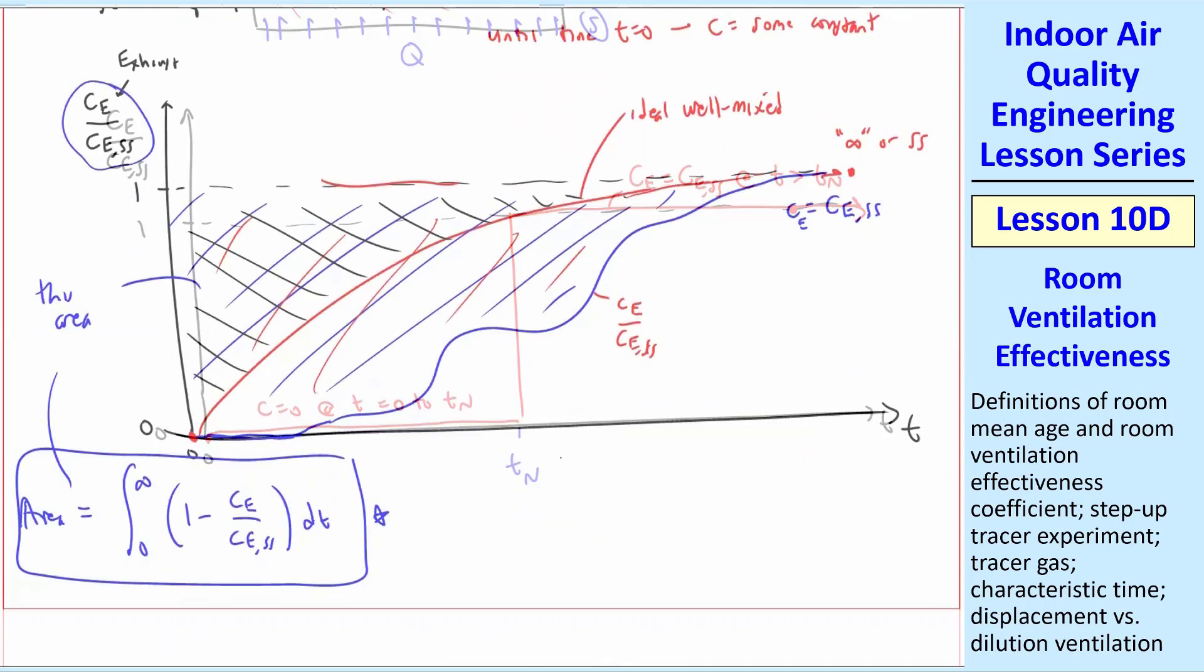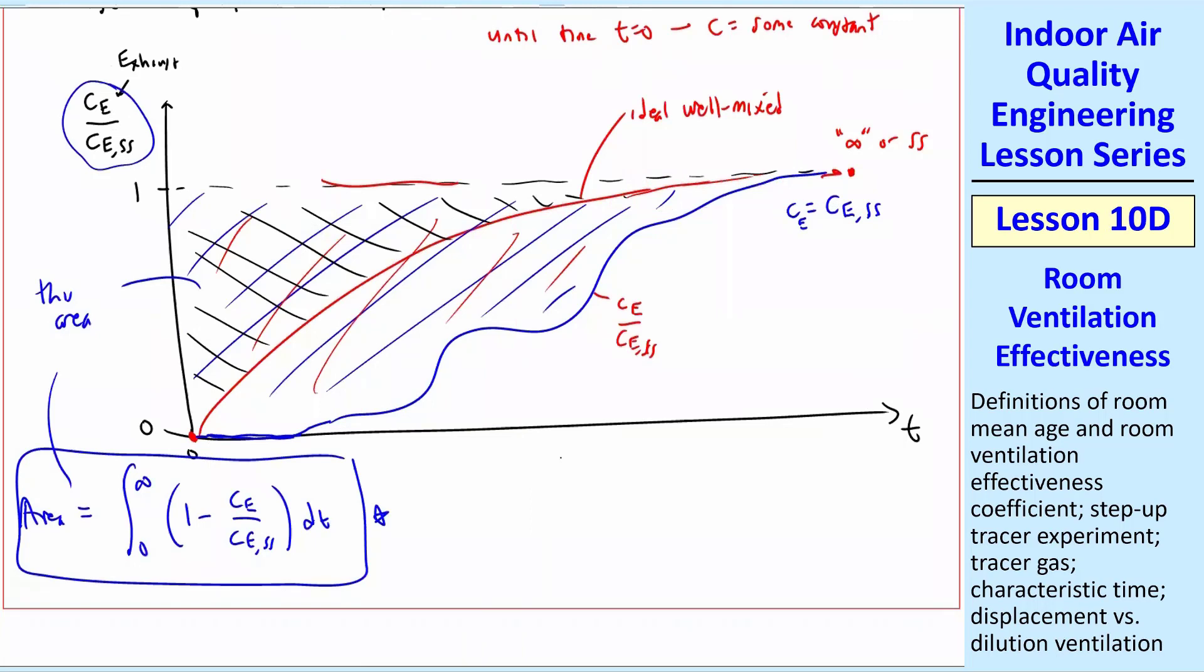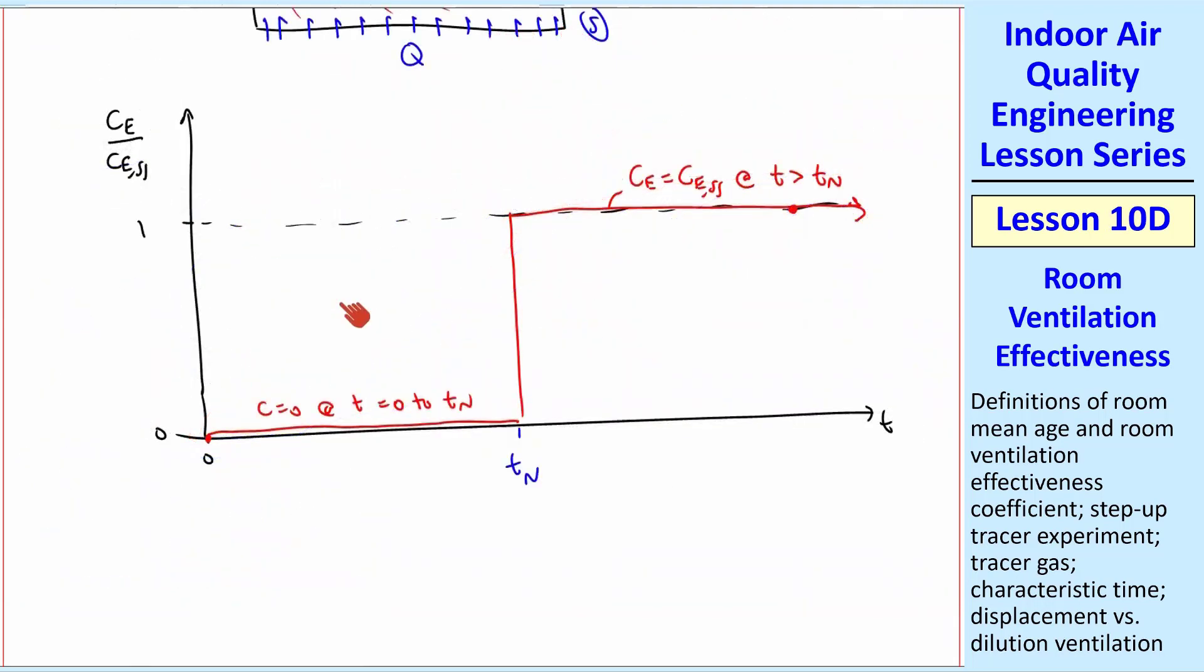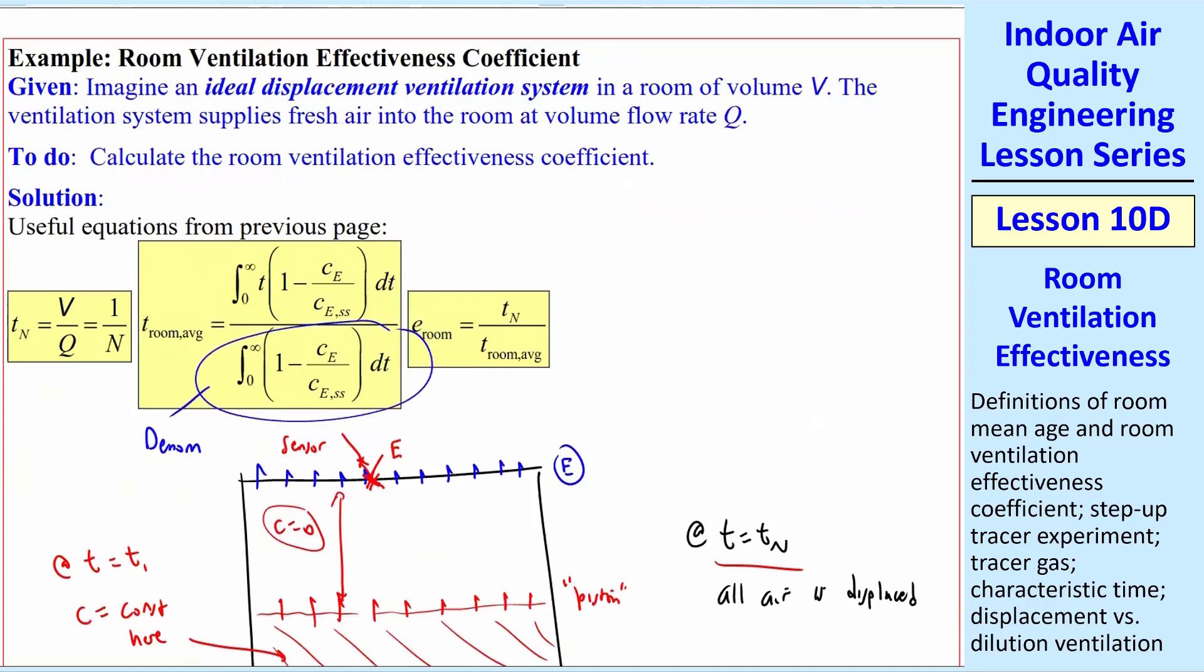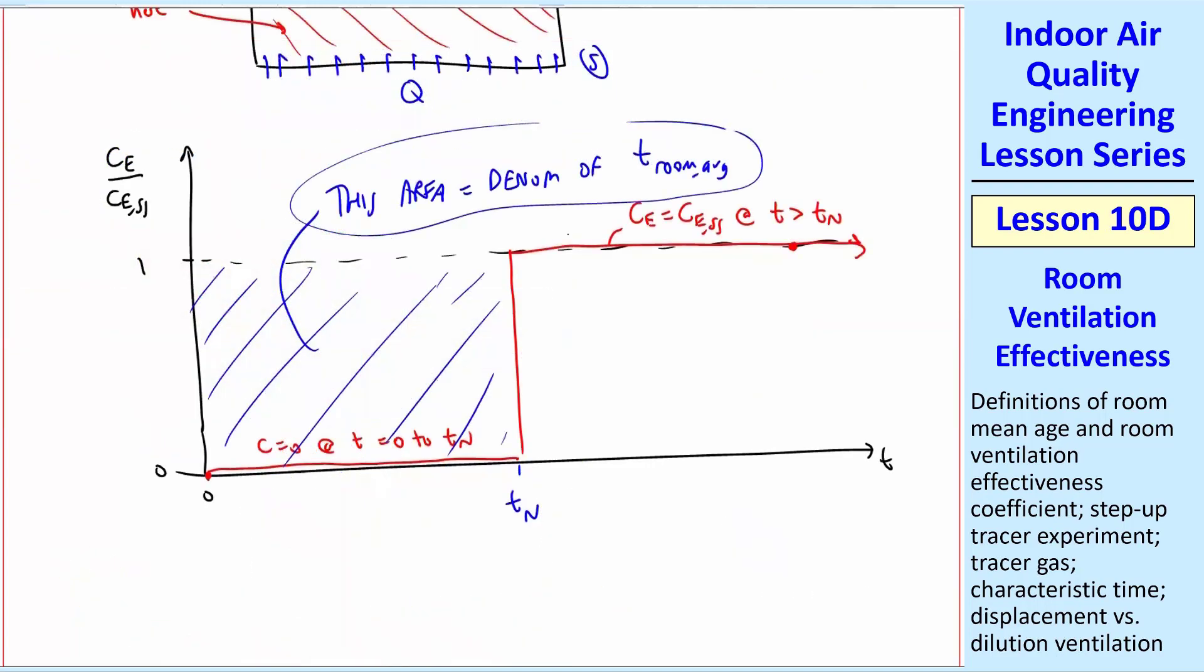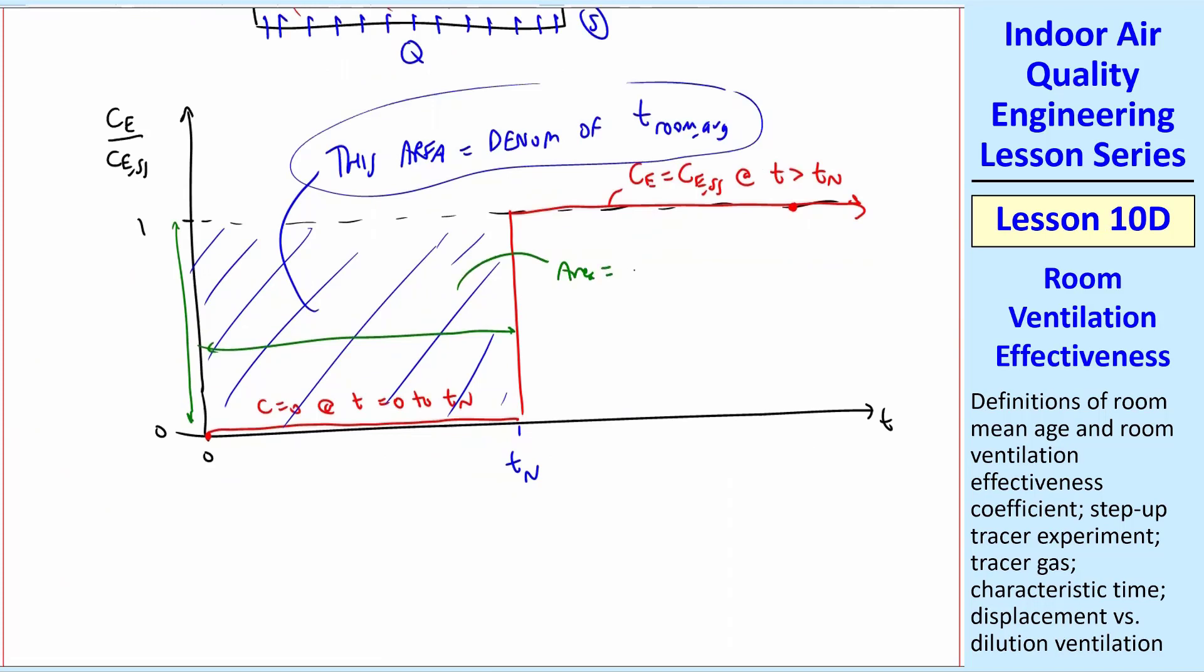So here's CE equal CESS at T greater than TN, and C equals 0 at T equals 0 to TN. So it's a stepwise function. And just as I had drawn this curve before, and we said the area in the denominator was the shaded area above the curve, in our example, it's just this area here. So it's between 1 and the curve. And then once you hit TN, it essentially goes to 0 because 1 minus CE over CESS is 0. And here it's 1. So this area equals the denominator of T room average. This is the denominator. We also have to do the numerator where we have to put another T in there. If the denominator is trivial, the area is the height times the width, and the height times the width is 1 times TN. So this area is equal to 1 times TN equal TN. So that's the denominator, just TN.